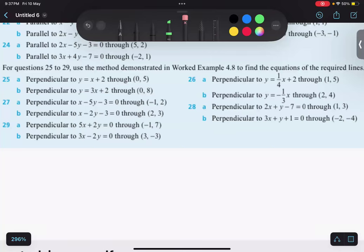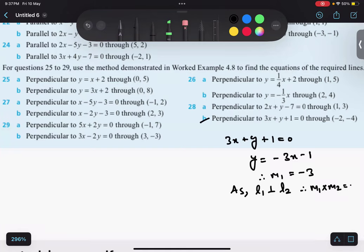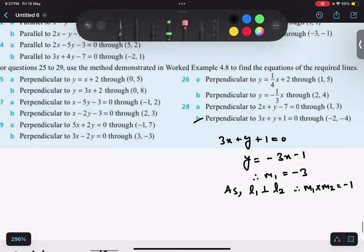In question number 28b, 3x plus y plus 1 equals to 0. So, y equals to minus 3x minus 1. Therefore, my m1 becomes minus 3. As line 1 is perpendicular to line 2, we have m1 multiplied by m2 equals to minus 1.